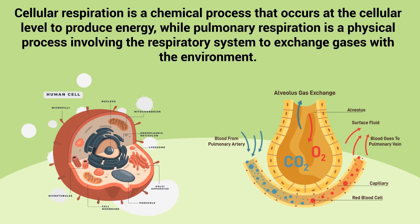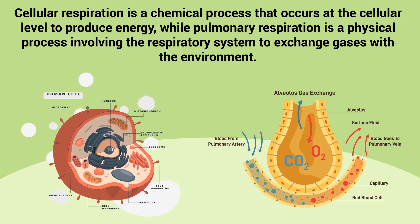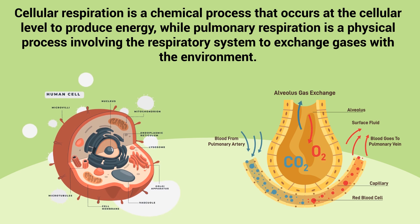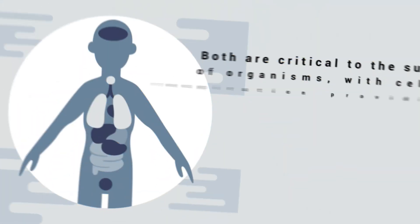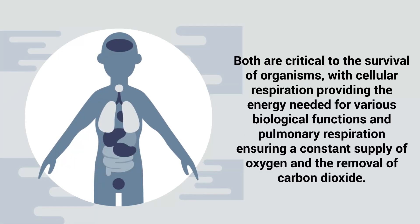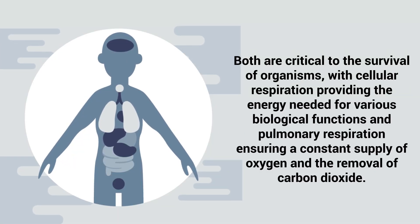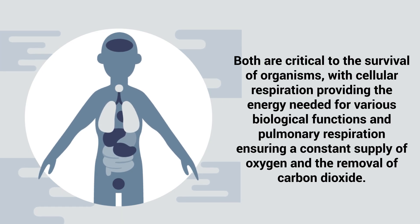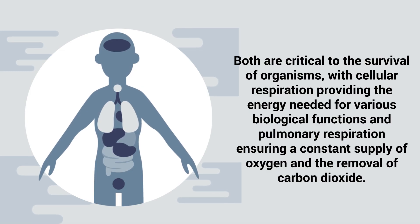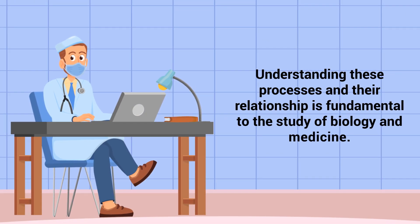As previously mentioned, cellular respiration is a chemical process that occurs at the cellular level to produce energy, while pulmonary respiration is a physical process involving the respiratory system to exchange gases with the environment. Both are critical to the survival of organisms, with cellular respiration providing the energy needed for various biological functions and pulmonary respiration ensuring a constant supply of oxygen and the removal of carbon dioxide. Understanding these processes and their relationship is fundamental to the study of biology and medicine.